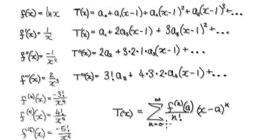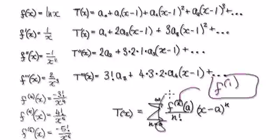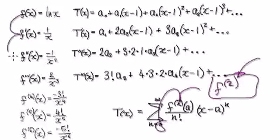When n equals 1, you put 1 in here — so that would be f of 1, meaning you're looking at your first derivative. When n equals 2, put 2 in here — that would be your second derivative. So you need all these derivatives each step of the way.